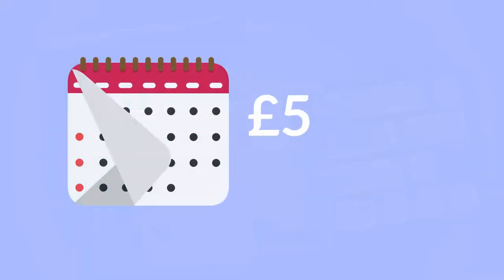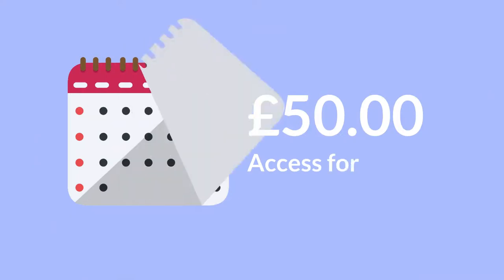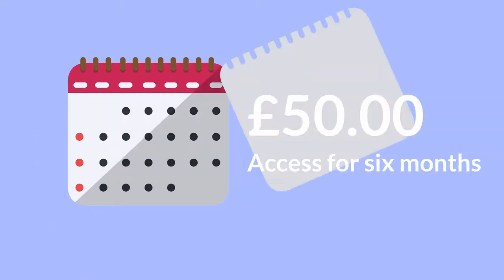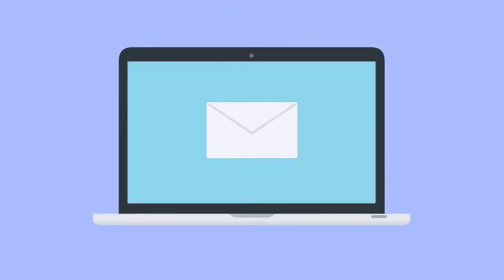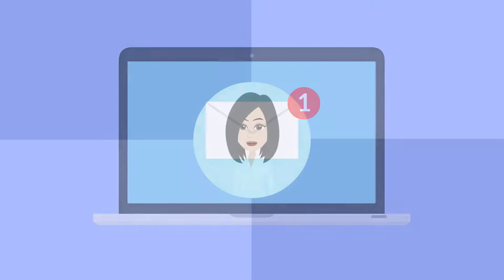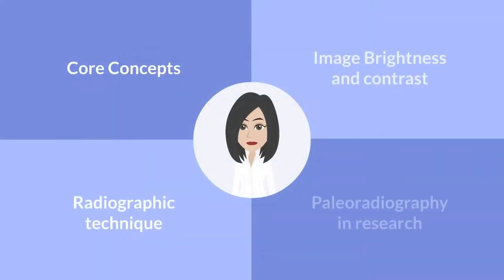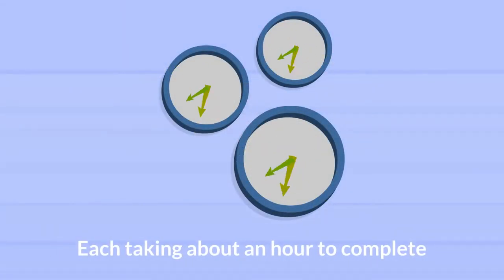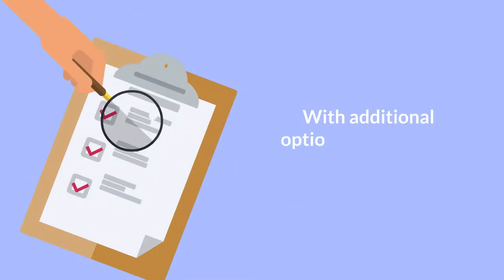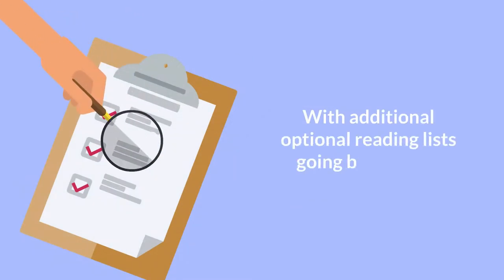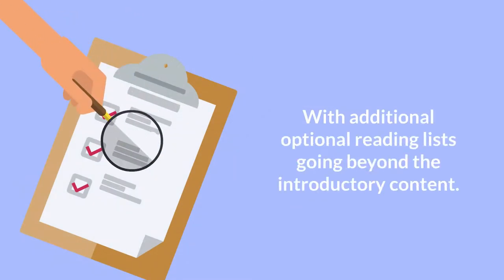For £50 you will have access for six months and receive a certificate of completion by email. The course is split into four sections, each taking about an hour to complete, with additional optional reading lists going beyond the introductory content.